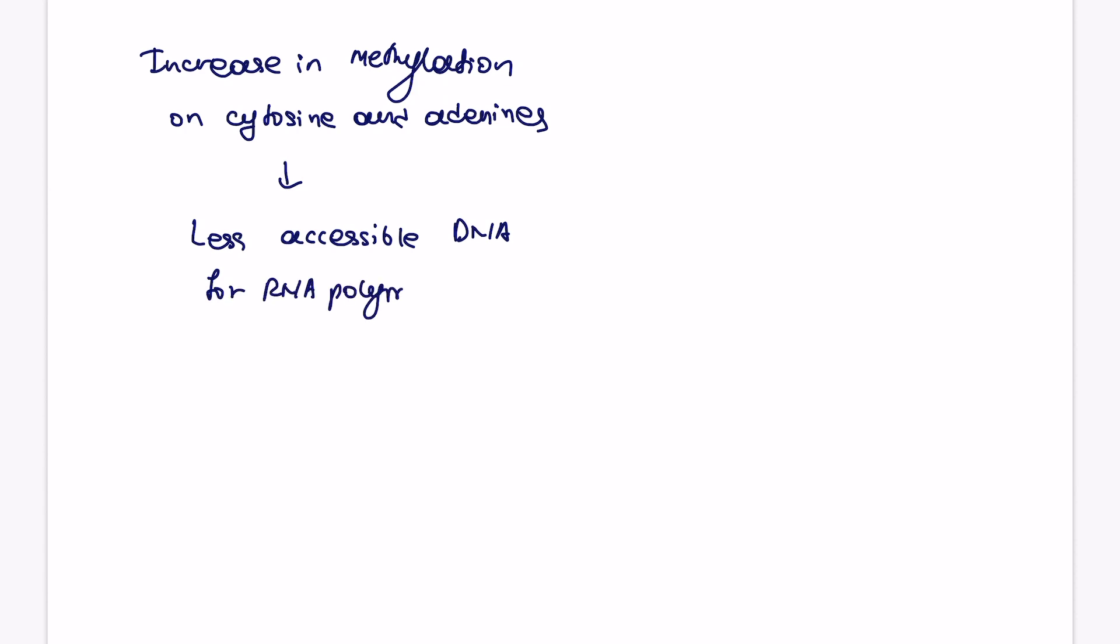So let's summarize it for you in a nice flow chart. So there is going to be an increase in methylation on specifically on cytosines and adenines. And then that means that the DNA will become less accessible for RNA polymerase to bind, resulting in the decrease of transcription in the cell. So that means that there'll be less transcription, obviously, hence less translation, and there will be less protein production happening in the cell.